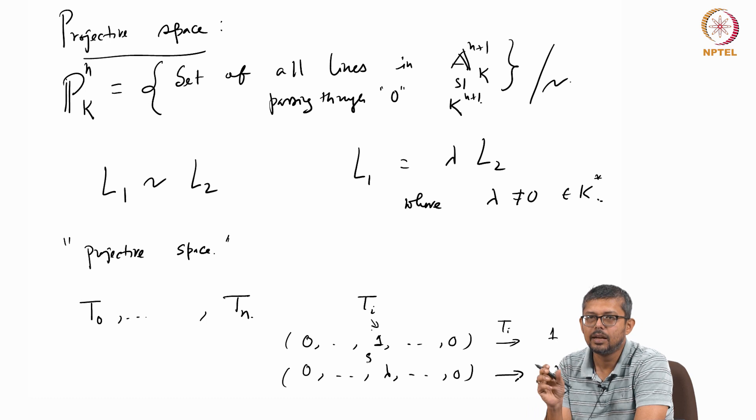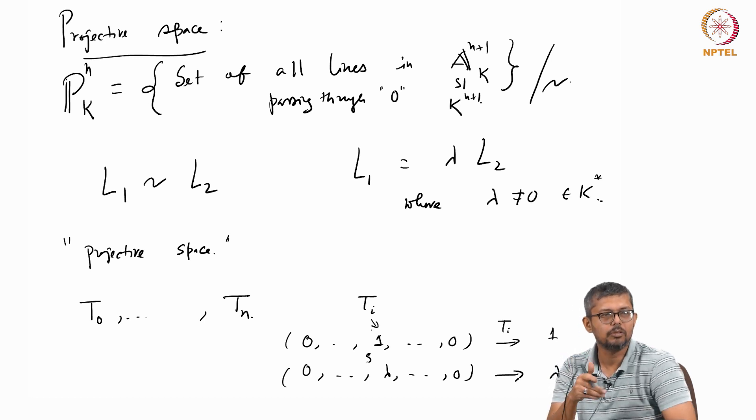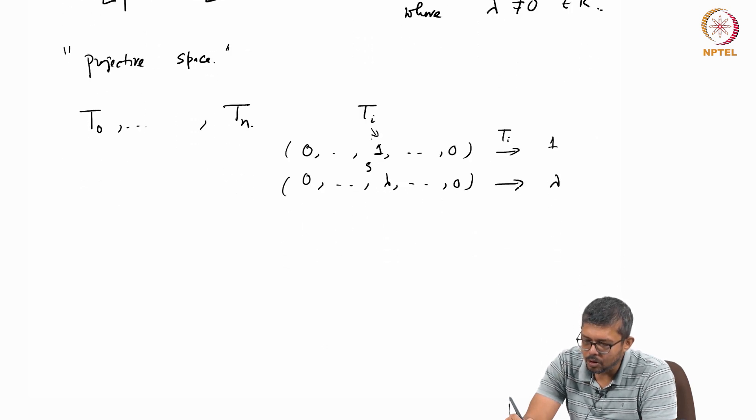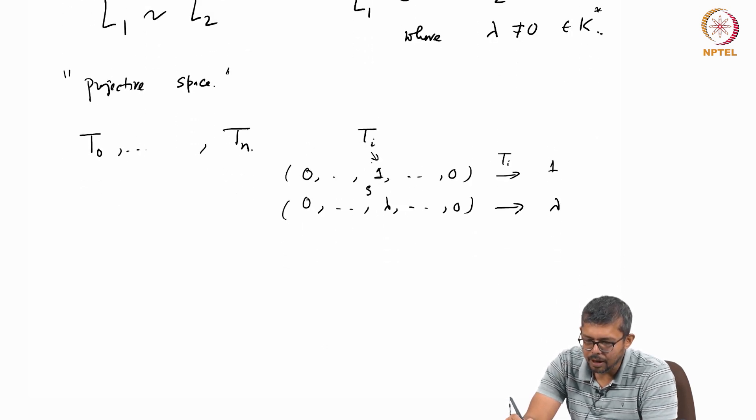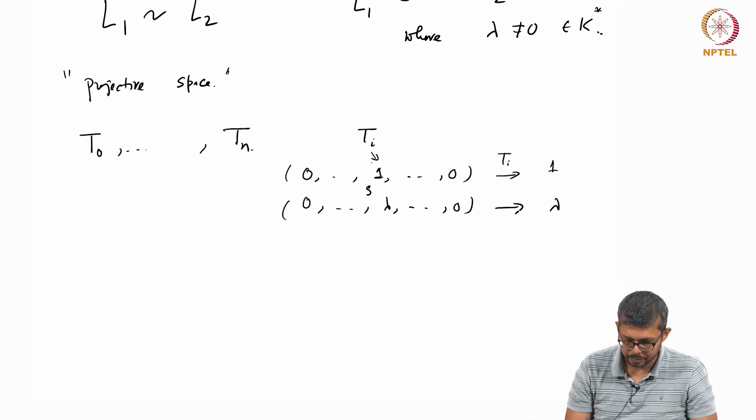So you have to take quotient of coordinates or quotient of function of some, satisfy some property, the degree condition. Degree of the numerator and denominator should be same, and they should be homogeneous. We will come to that. So not all functions on affine space give a function on the projective space.